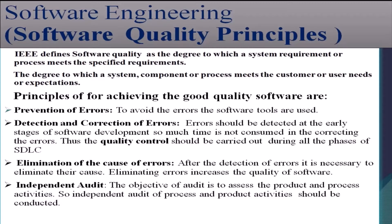The next principle is elimination of the cause of errors. After the detection of errors, it is necessary to eliminate their cause. Eliminating errors increases the quality of the software. Independent audit — the objective of the audit is to assess the product and process activities, so an independent audit of the process and product activities should be conducted.